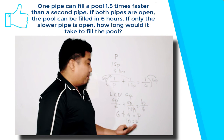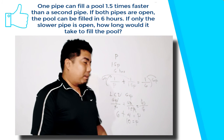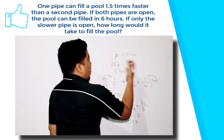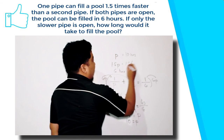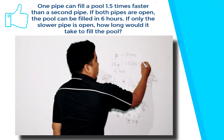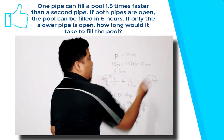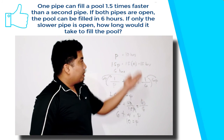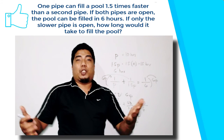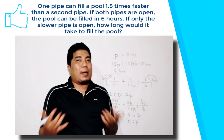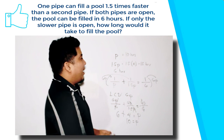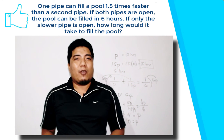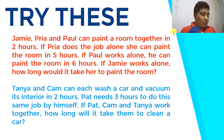Since p equals 10 hours for the first pipe, the second pipe takes 1.5 times 10, which is 15 hours. We need to find the slower pipe — 10 hours versus 15 hours — the slower pipe takes 15 hours. Therefore, the final answer is 15 hours.